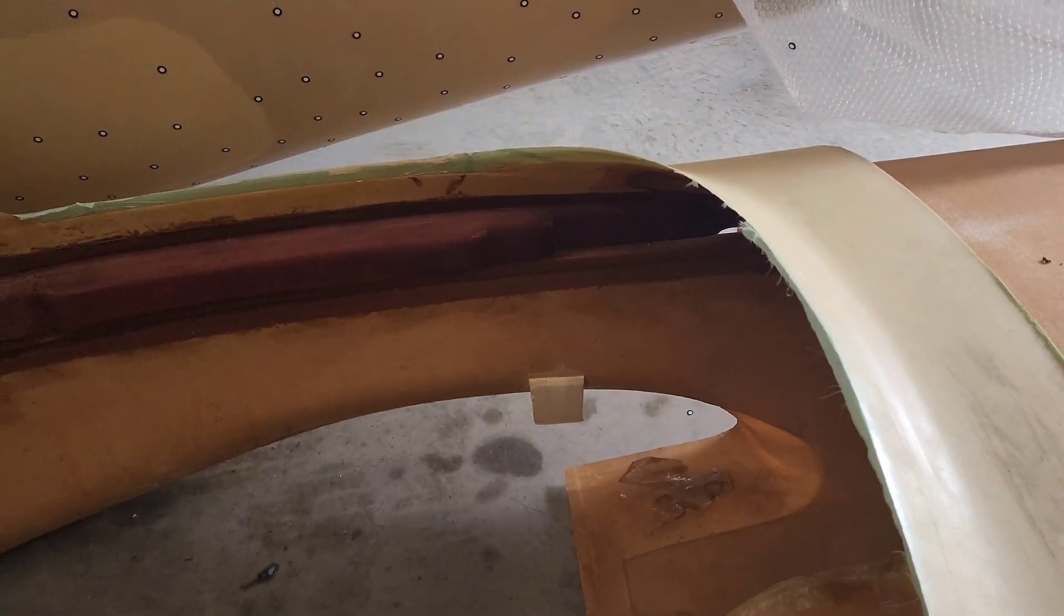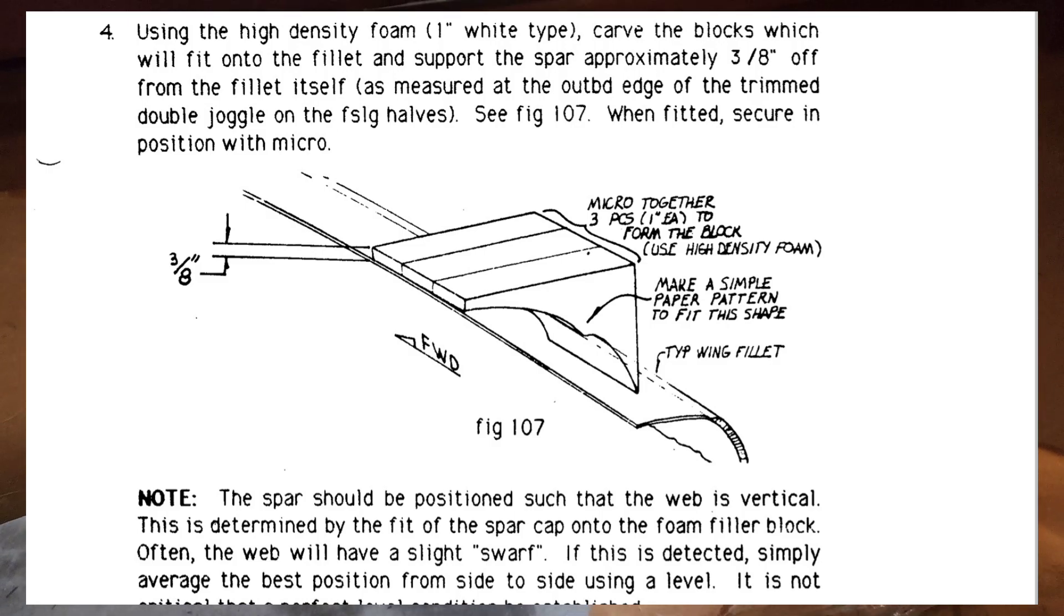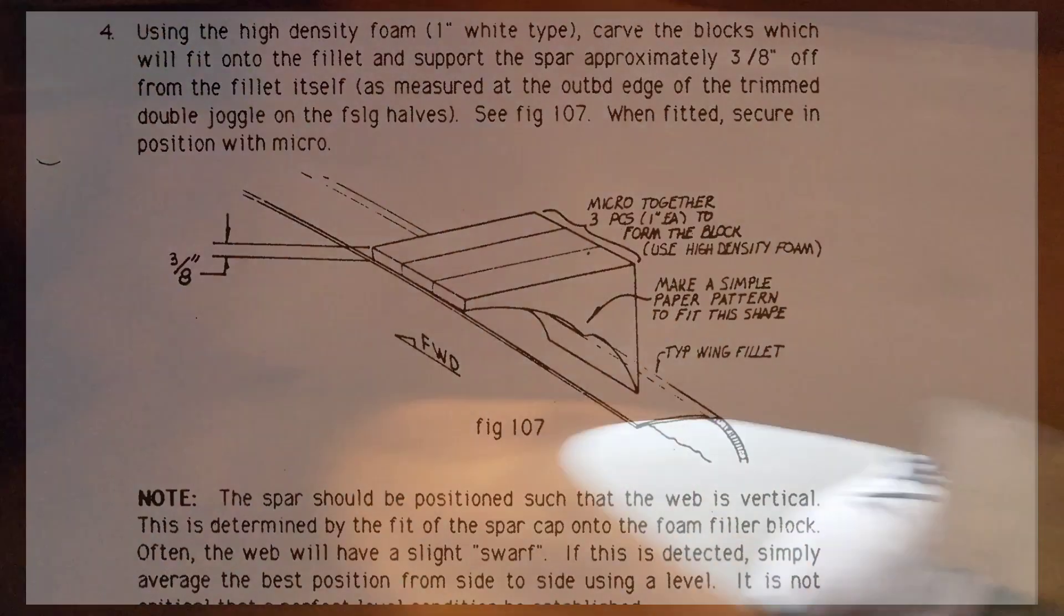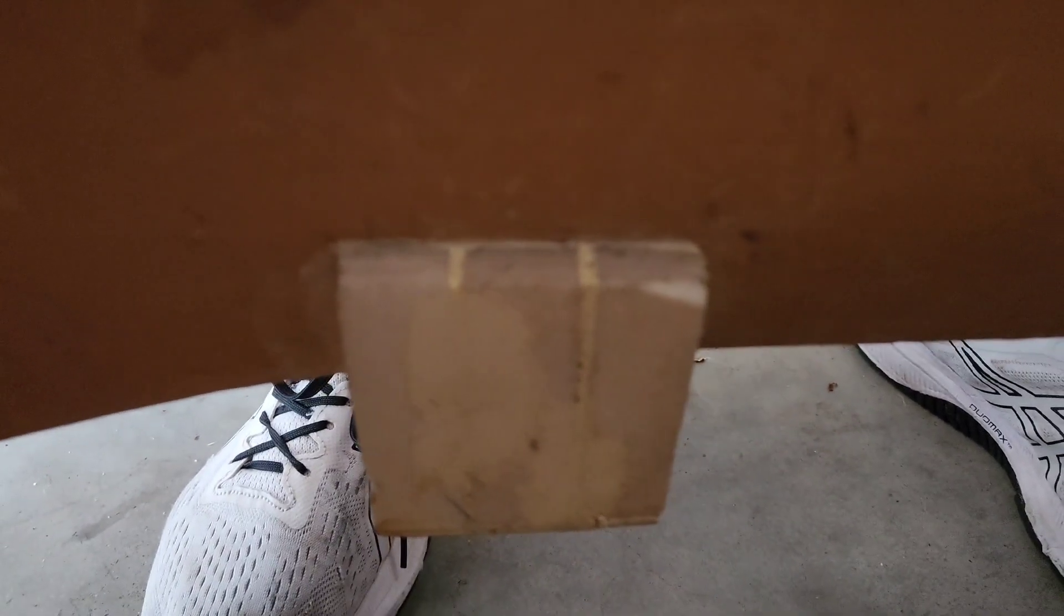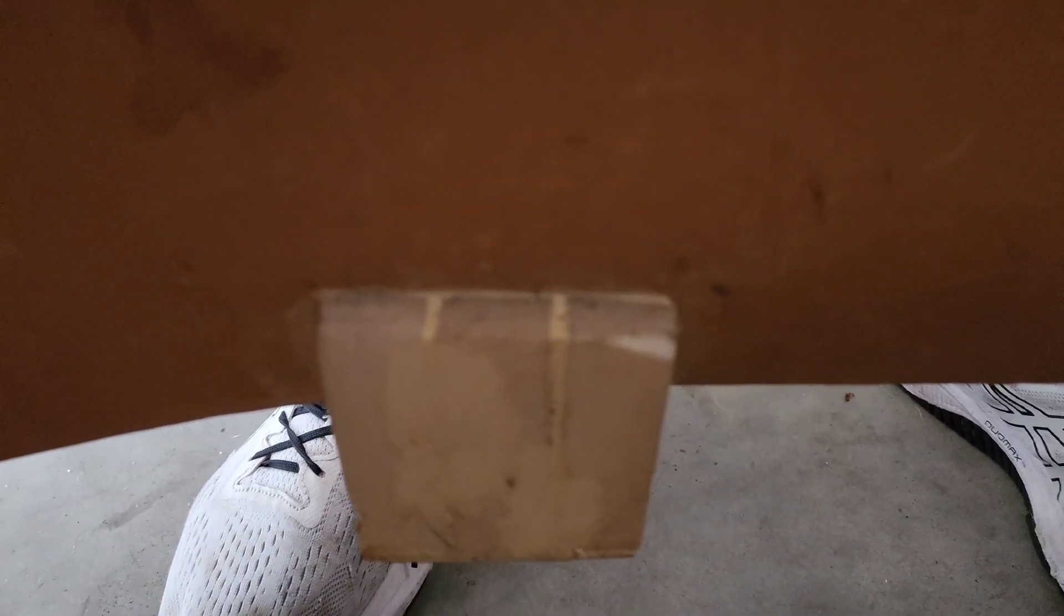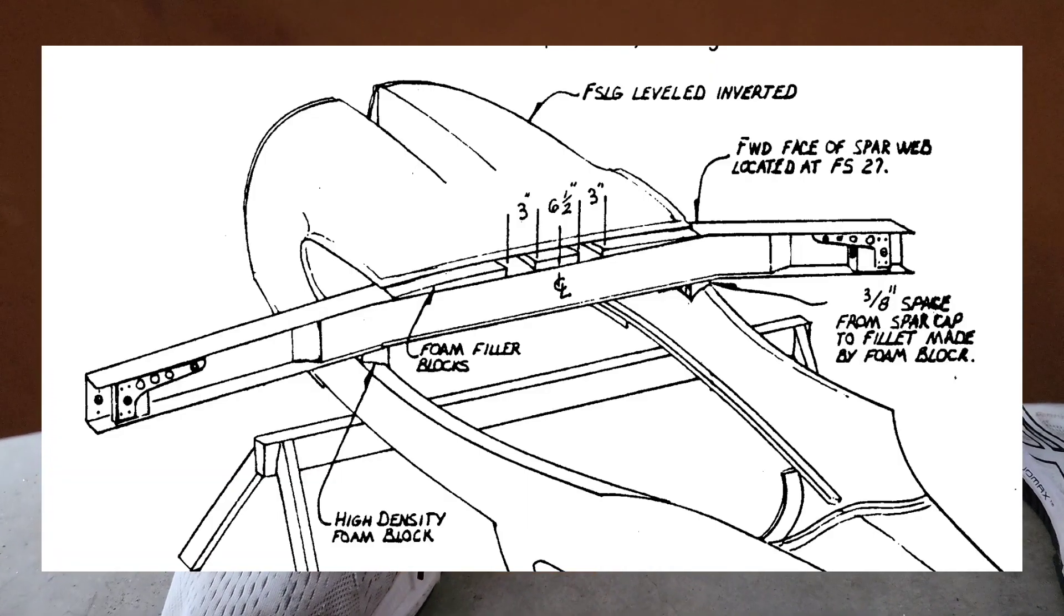One of the very first steps in building the Lancer 360 is to create wing saddles on the slow build kit. Now these are already constructed on the fast build kit, but these basically are for aligning the main spar and creating an indexing location for the main spar to sit.